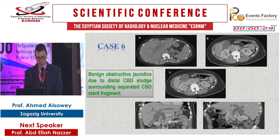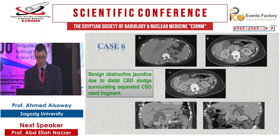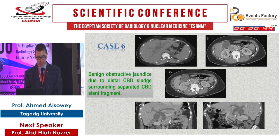A final case involves common hepatic duct and common bile duct stent removal two months ago, and there is a retained common bile duct stent fragment. This is a dense fragment surrounded by biliary sludge, with retrograde dilatation of the common bile duct and intrahepatic biliary ducts.